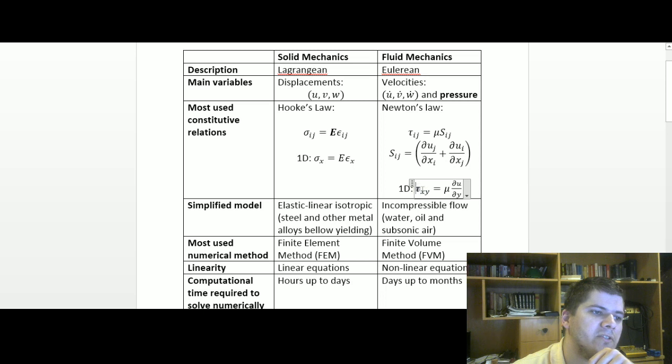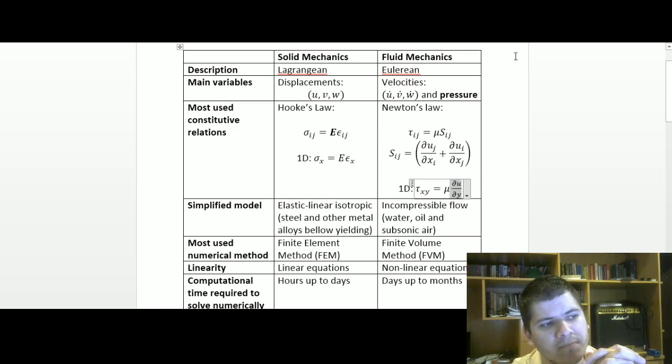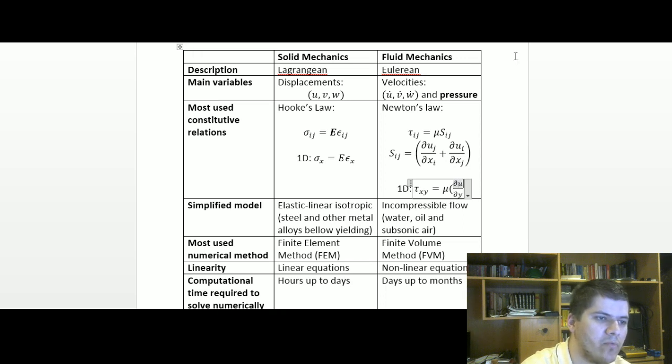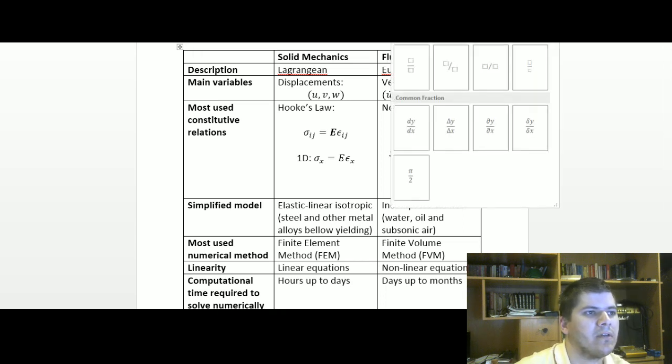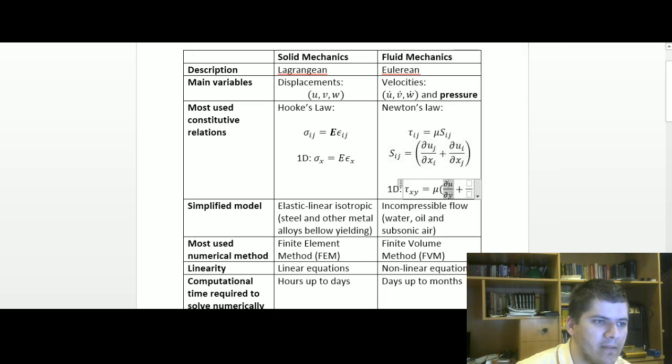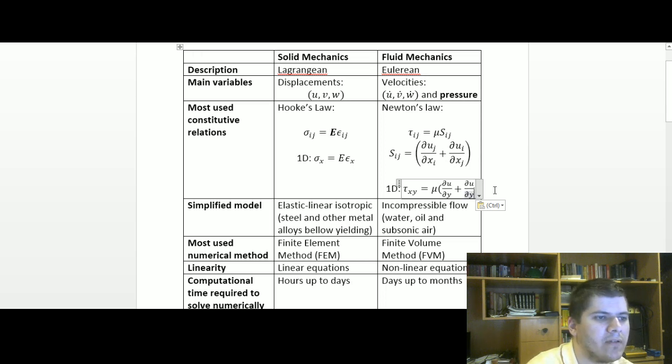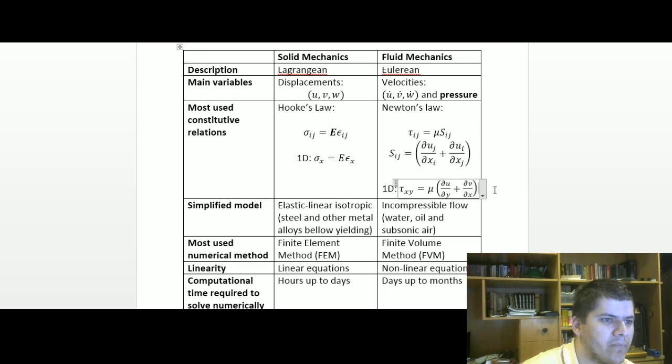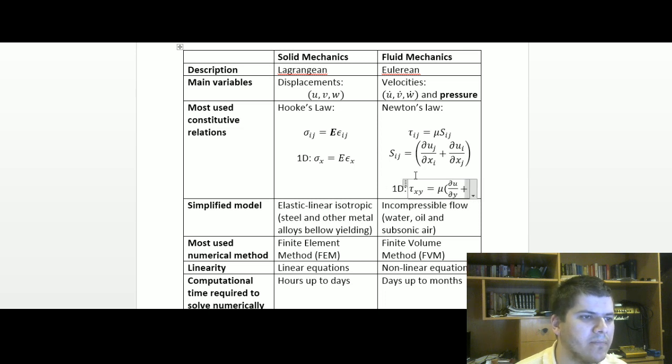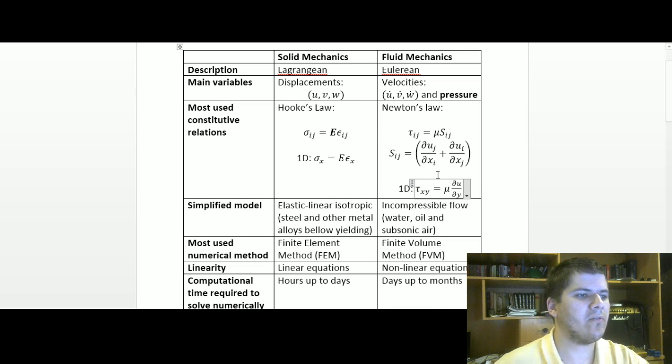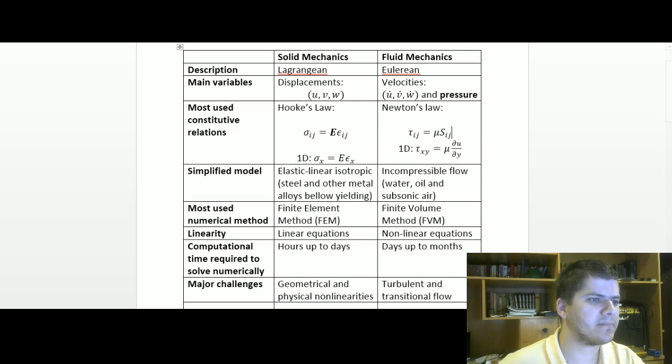For one-dimensional we have tau, or shear stress in xy, equals a constant which is known as the dynamic viscosity, times the velocity gradient in the y direction. For 2D we would have another component of the velocity gradient.